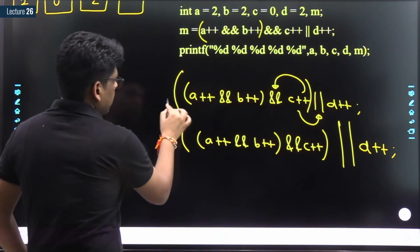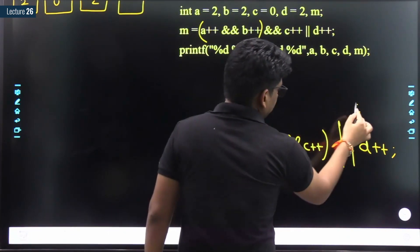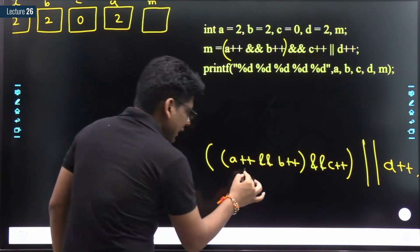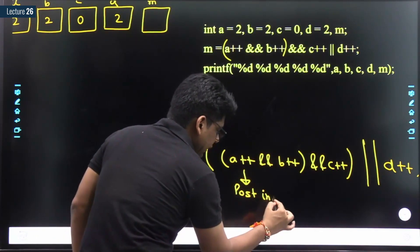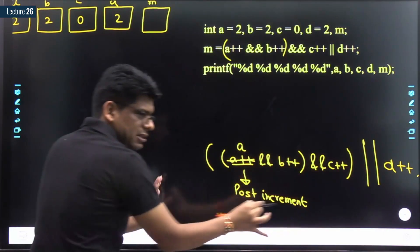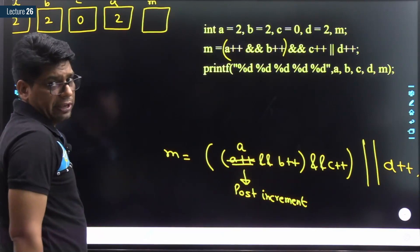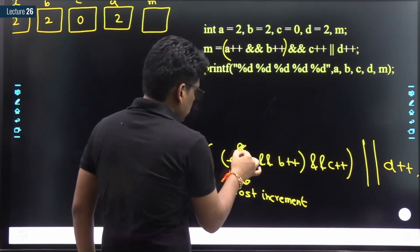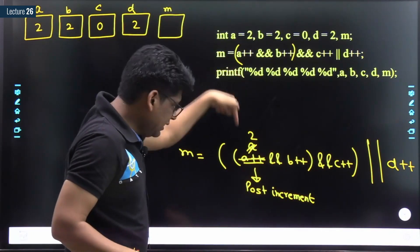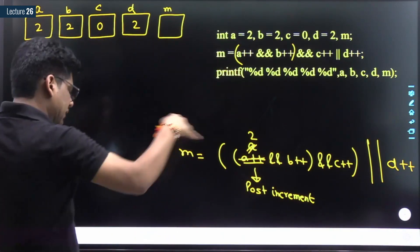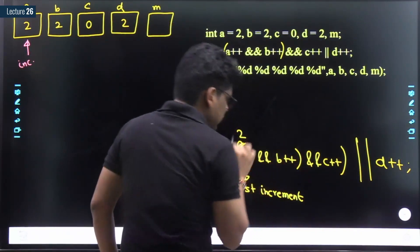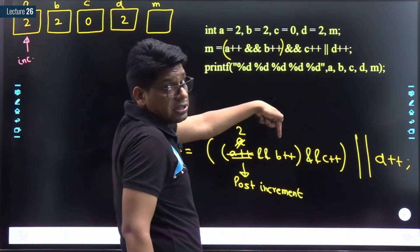Let's solve step by step. First, a++ AND b++. Both are post-increments, so use the current values first. a is 2 and b is 2, both non-zero. We use 2 for a and 2 for b, and will increment them after. Non-zero AND non-zero gives true, result is 1. Then 1 AND c++: c++ is post-increment, so use c which is 0. 1 AND 0 is 0. After using c, we need to increment c.